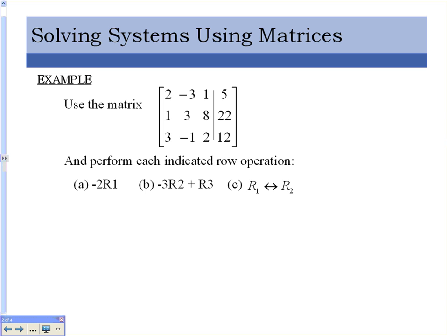If I have this matrix, this is row 1, this is row 2, and this is row 3. There are three things I'm allowed to do: I can switch the rows — like I can take row 1 and switch it with row 2. I can multiply a row by a number, and I can also multiply a row by a number and add it to another row.